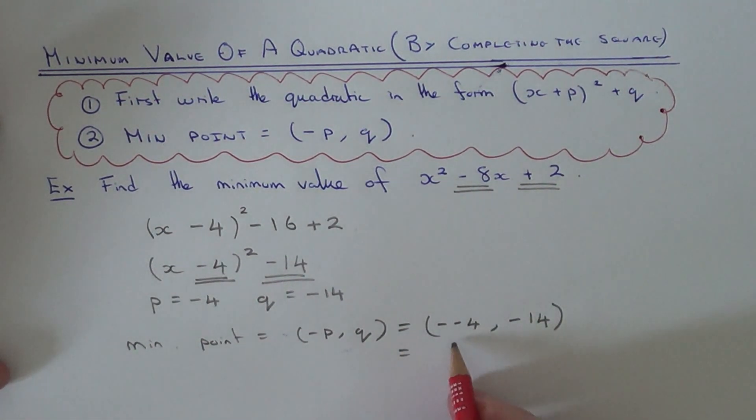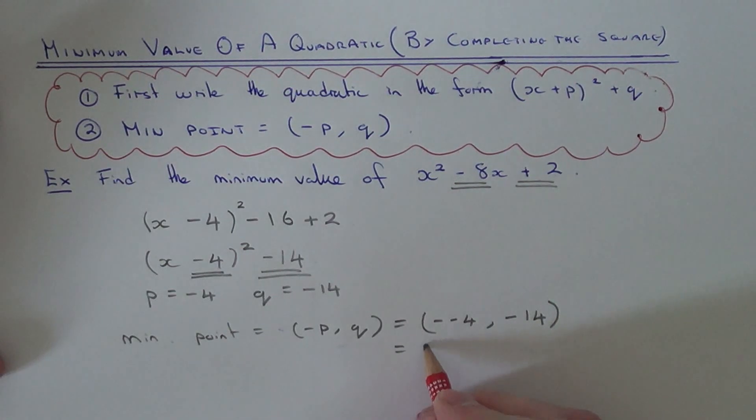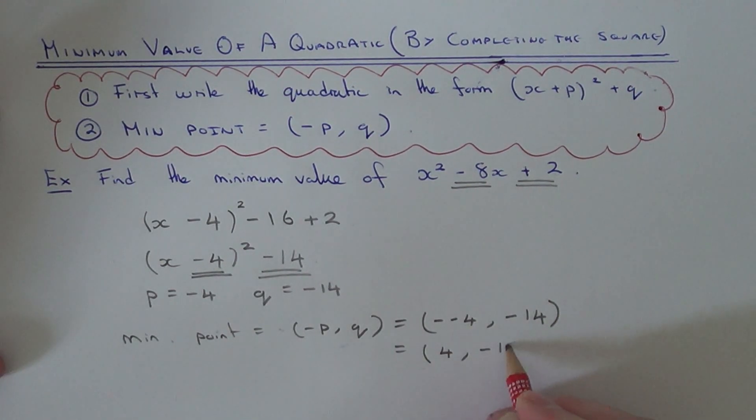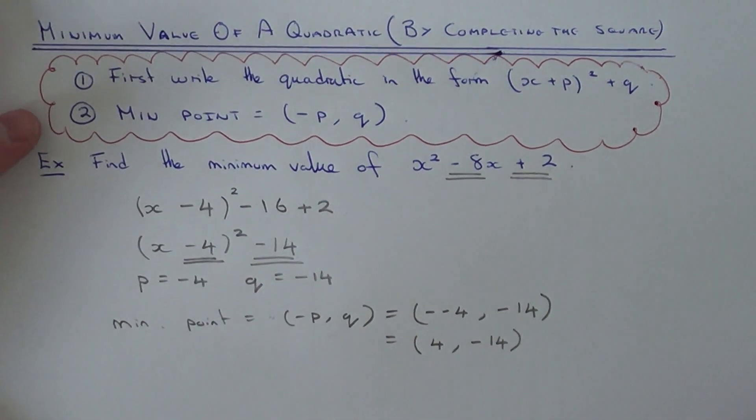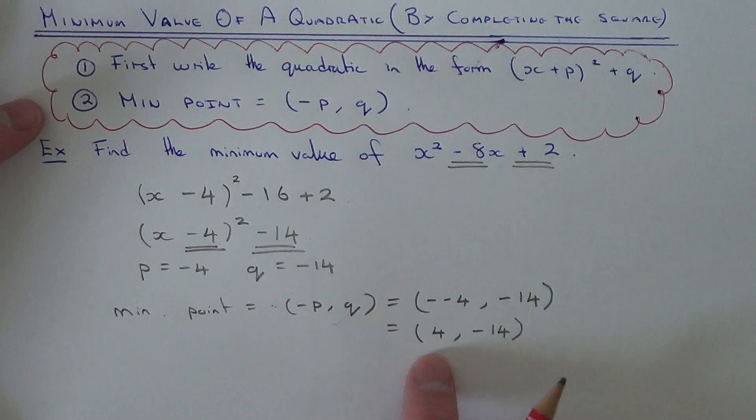So we can simplify this bit here. Minus minus 4 is plus 4 and our y coordinate is minus 14. So this is the coordinate of the minimum point on our graph.